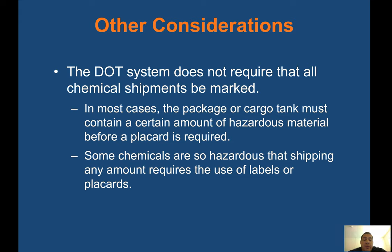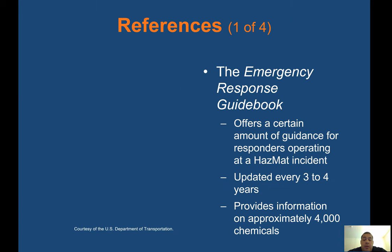Other considerations: the DOT system does not require that all chemical shipments be marked. In most cases, a package or cargo tank must contain a certain amount of hazardous material before a placard is required. However, some chemicals are so hazardous that shipping any amount requires labels or placards. The Emergency Response Guidebook — the orange book — offers guidance for responders at HAZMAT incidents, is updated every three to four years, and provides information on approximately 4,000 chemicals. It is mandatory for all ambulances to carry in some counties.